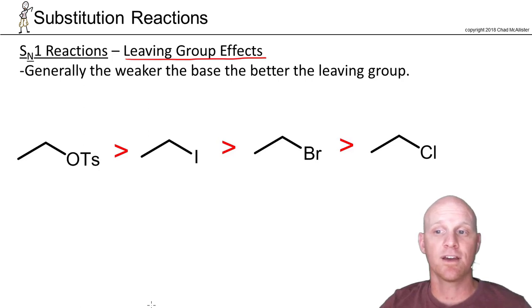But in both cases, the leaving group leaves in the rate determining step. And so they follow the same trend. And you need a better leaving group in both cases. And generally, the weaker the base, the better the leaving group, the faster the reaction.